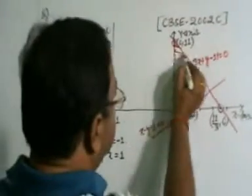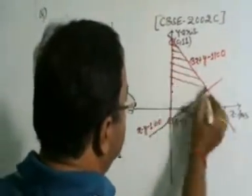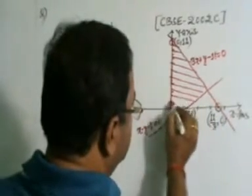So, this region ko, isko humko shade karna hai. Yeh jo triangle ban raha hai, we have to shade this region.